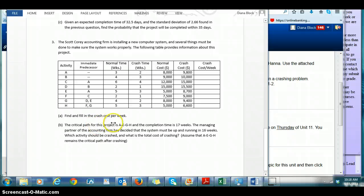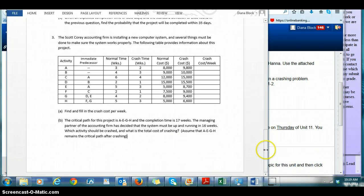Then part B tells you what the critical path is and asks you which project should be, which activity, I'm sorry, which activity should be crashed if you're trying to cut some weeks off. So remember, you'll need to know the critical path in order to determine which activity should be crashed. That's going to be critical information for you.